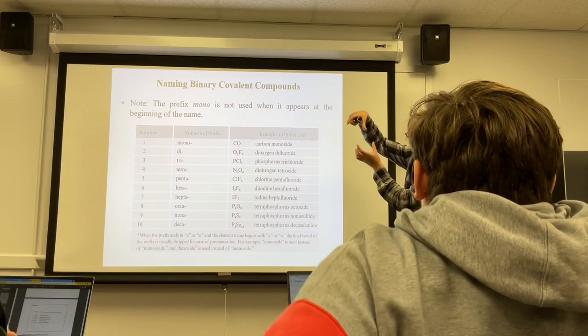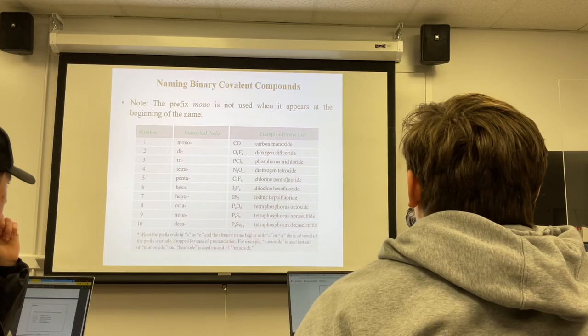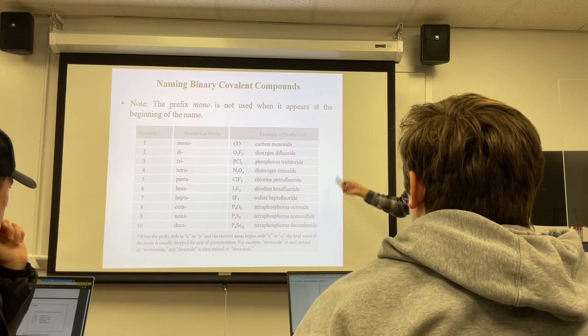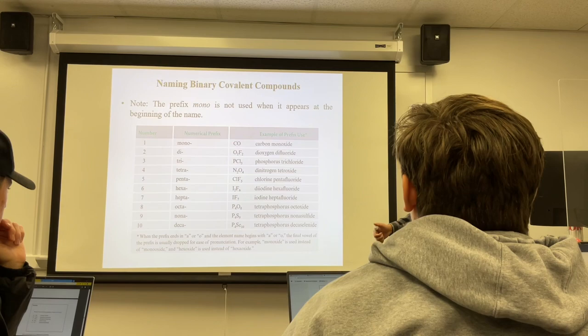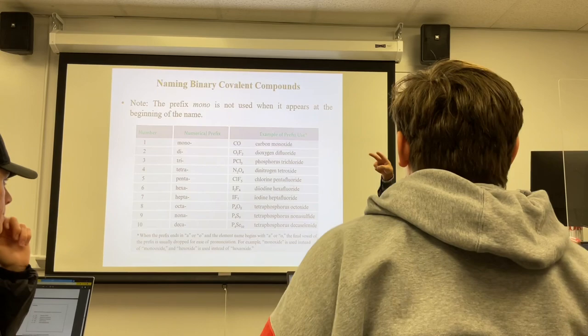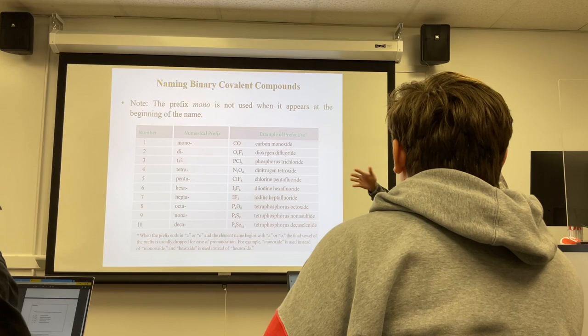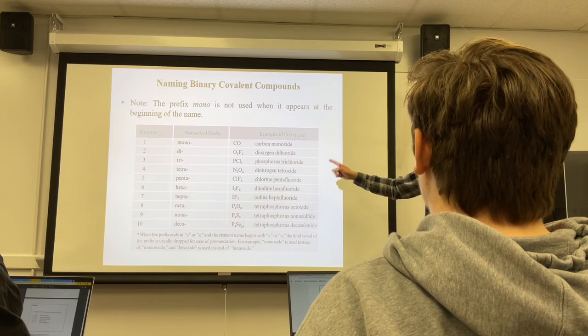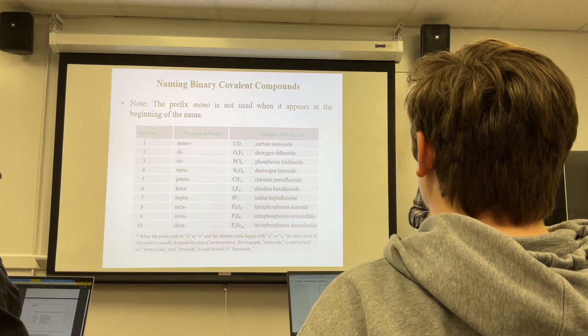We studied matter classification, formulas, and the periodic table. Next, let's look at how matter can change. There are two types of changes: physical change and chemical change. The difference is whether the change results in new substances — in other words, whether the chemical composition changes. If composition does not change, we call it a physical change. If the composition changes, meaning new substances are generated, we call it a chemical change.